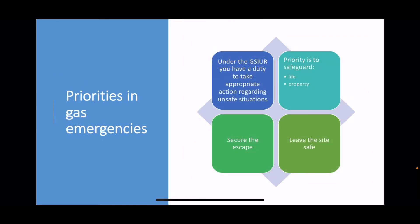Your priorities in a gas emergency: safeguard life first, then property. You've got to secure the escape of people who are at risk. Your responsibility is to leave the site safe - you don't just run away and leave the leak. You've got to do something about it: turn off the ECV, trace the leak, that sort of thing.